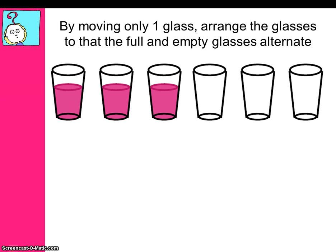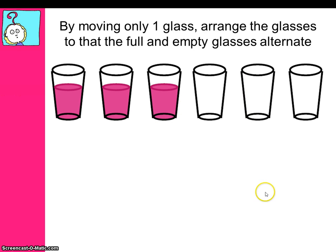Did you figure it out? The solution is actually pretty simple. In order to move only one glass, you just pick up this one here and you pour the contents into this one over here, so that they will actually alternate between full and empty. Pretty simple, huh?